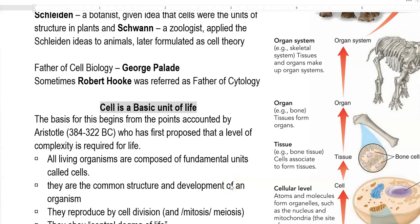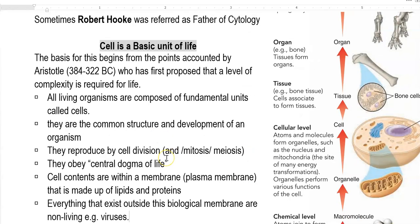Hello students. The next lecture is related to how the cell is referred as a basic unit of life, or what points have been proposed by various scientists stating that cell is a basic unit of life. The basis for this has begun with points provided by Aristotle, who was the first person to propose the level of complexity required to form a living organism. He gave certain points validating that cell is a basic unit of life.